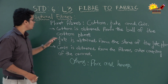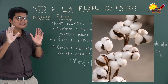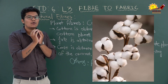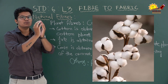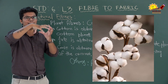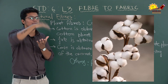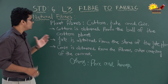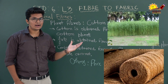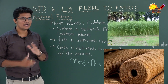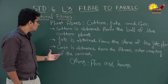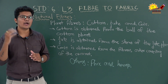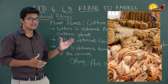Cotton is obtained from the ball of the cotton plant. In the ball there is a seed, and from that seed cotton starts sprouting and opens up — becoming strong and thick. That is how cotton fiber is formed. Jute is obtained from the stem of the jute plant. Coir is obtained from the fibrous outer covering of the coconut.